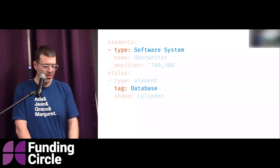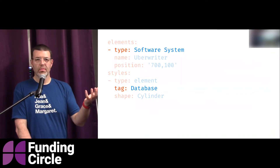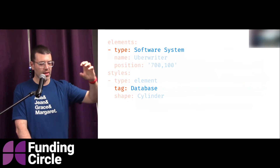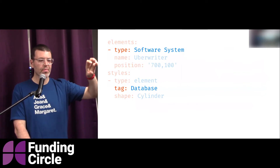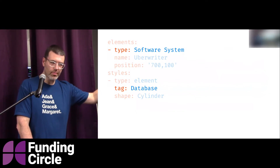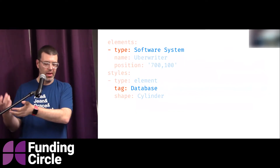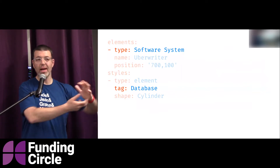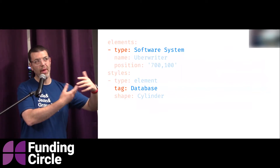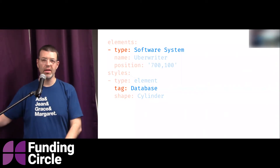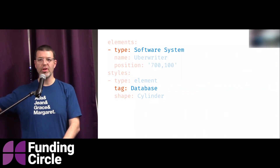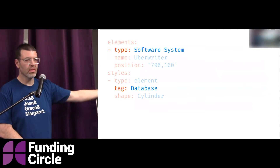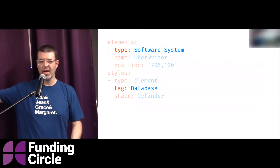One of the challenges I encountered was this 'type' key — it gets repeated in two different contexts. In the top part, a map representing an element can have a 'type' key with a certain set of enumerated values. Below that, a map representing a style also has a 'type' key, with a different enumerated set of values. So there are different types of elements and different types of styles, and those sets are not related.